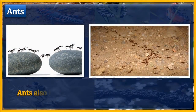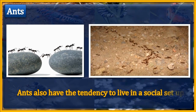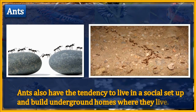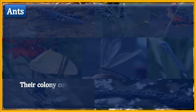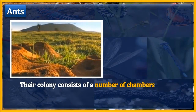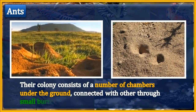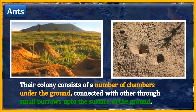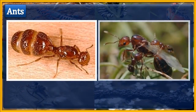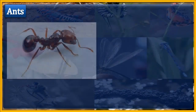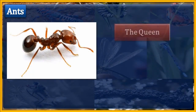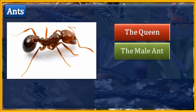Ants also have the tendency to live in a social setup and build underground homes where they live. Their colony consists of a number of chambers under the ground, connected with each other through small burrows up to the surface of the ground. These burrows are used to store food. Like honeybees, ants are also classified into three groups: the queen, the male ant, and the worker ants.